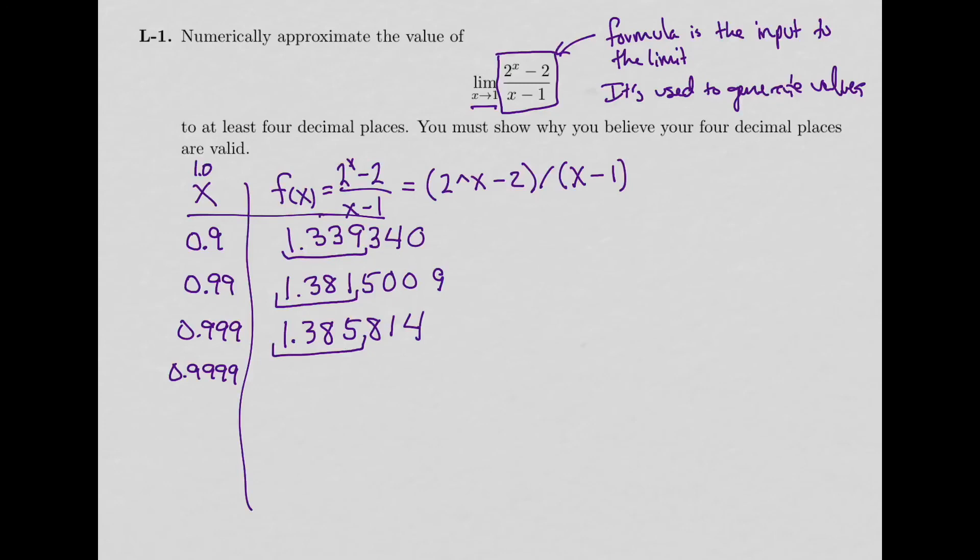So let's do one more value. If I do 0.9999 in my formula, 4 nines. 2 to the power of 0.9999, minus 2, divided by 0.9999, minus 1. And what am I at? I'm at 1.38624. I'm still changing in that 4th decimal place. Well, the 4th digit.